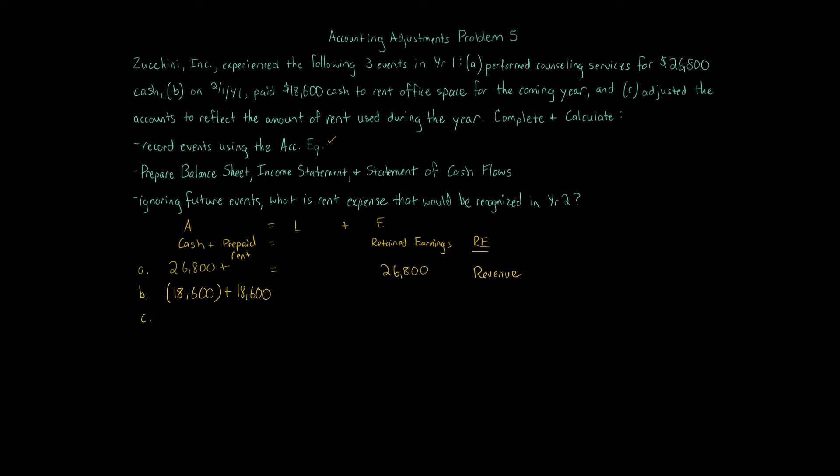Transaction C, adjusted the accounts to reflect the amount of rent used during the year. Well, some of you might be wondering, what the heck, what amount is it? Or what do we do? Well, if we're not told in a problem, we assume that a company is calendar year. If we purchased the prepaid rent on February 1st for $18,600 cash for the coming year, that means based on the information, we're getting one year worth of prepaid rent when we purchased that $18,600 of rent. So think about it. We're on February 1st.